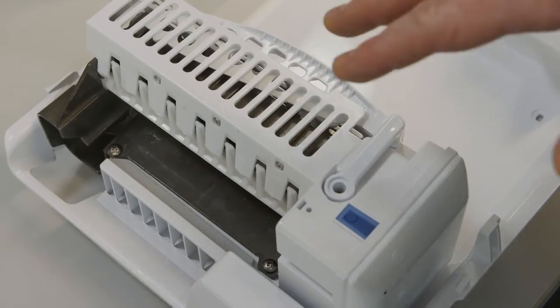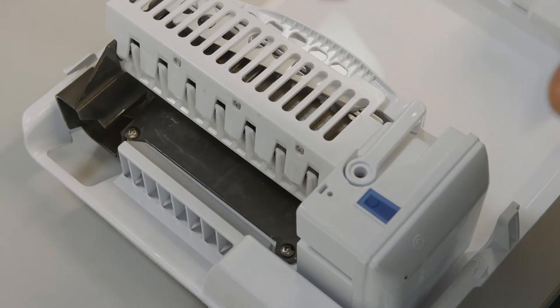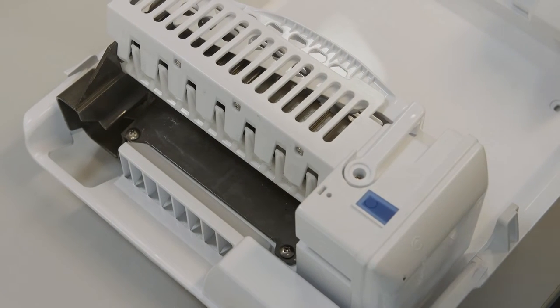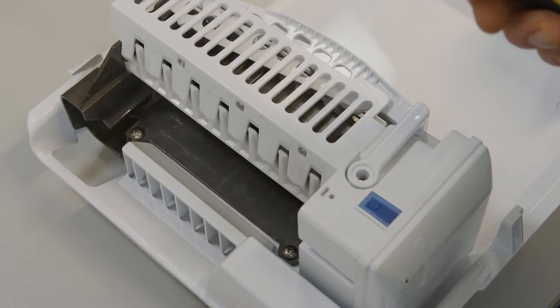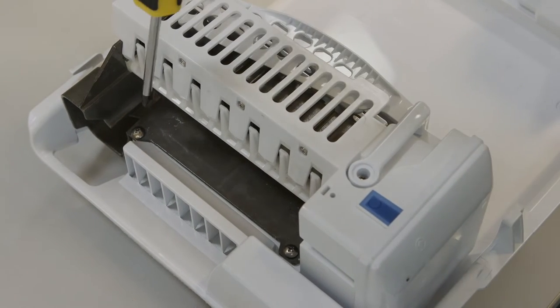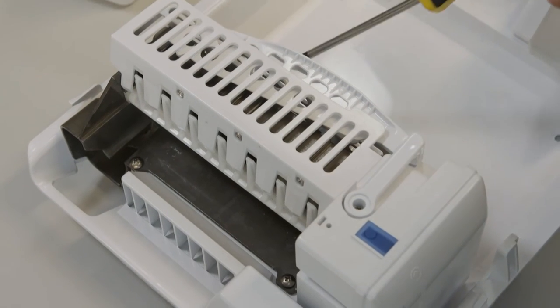Now that the panel has been removed, it's time to remove the ice maker itself. Using the Phillips screwdriver, remove the three screws holding the ice maker in place. There should be two screws on the top and one on the bottom.